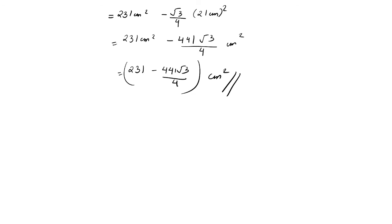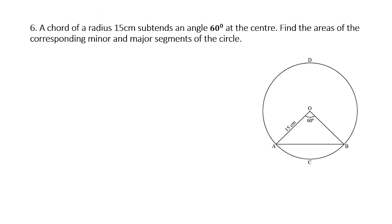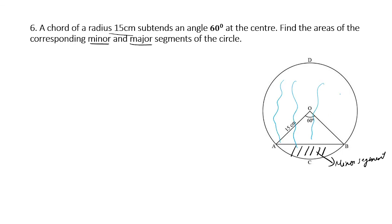Read the question carefully to understand what's being asked. Moving to question 6: draw a circle of radius 15 cm with an arc subtending 60° at the center. Find the areas of the corresponding minor and major segments. The black area is the minor segment and the blue region is the major segment.